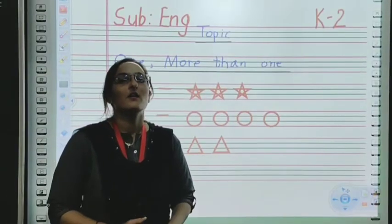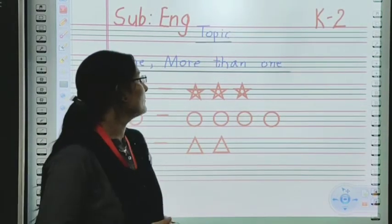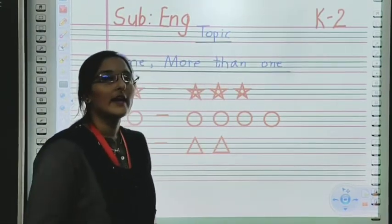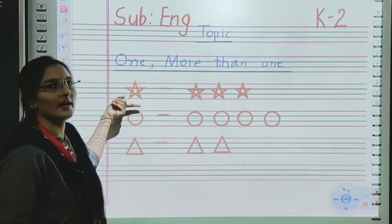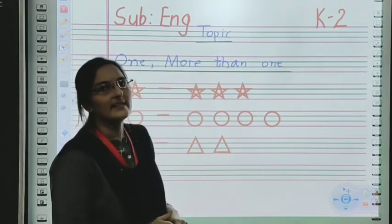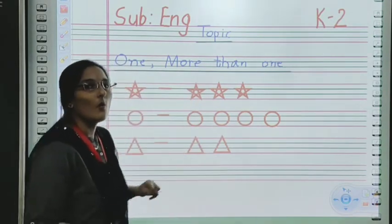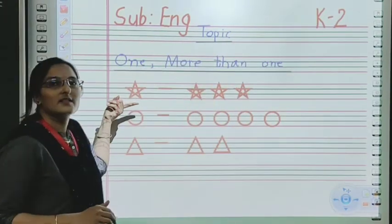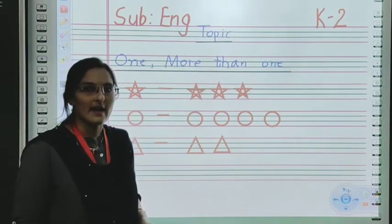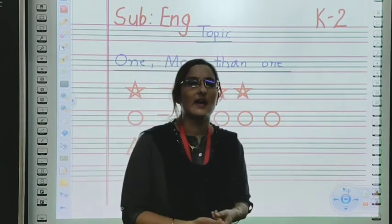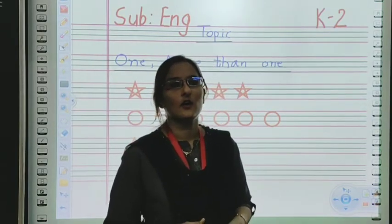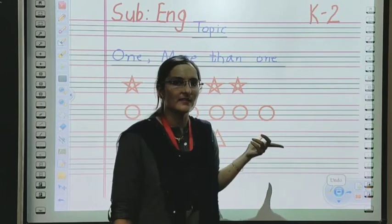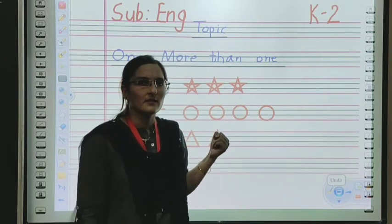Now students, we will learn one and more than one or many from the examples given on this board. I have drawn many shapes on the board. Look at the first example. What's drawn over here? Star. On this side, how many stars are there? One, two, three. So we have to add S in the spelling of stars. S-T-A-R, star. When we are talking about more than one star, we have to add S. It will become stars: S-T-A-R-S. Got it?